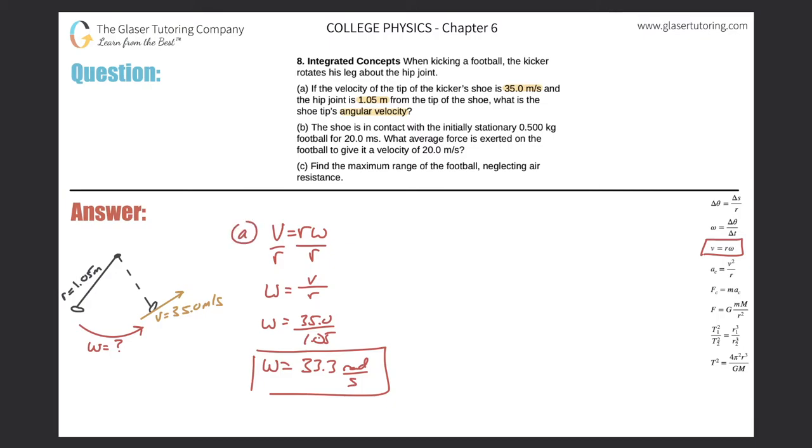That takes care of letter A, easy peasy. Letter B: The shoe is in contact with the initially stationary 0.5 kilogram football for 20 milliseconds. What average force is exerted on the football to give it a velocity of 20 meters per second? This is a little throwback to last chapter and the chapter before.